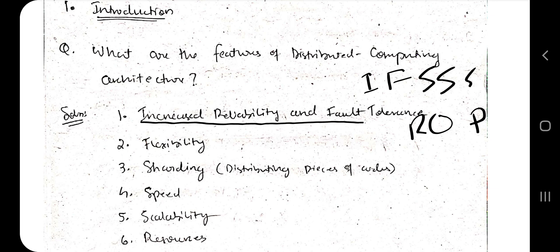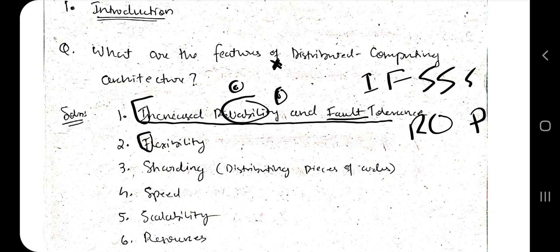I means Increased reliability and fault tolerance. In distributed computing, resources are distributed across different parts of the system, so if one system fails, others come to rescue. Fault tolerance means if one has a fault, the correct answer comes from the others. F means flexibility — if one part fails, the system is flexible enough to accommodate the rest. And S means sharding, which means distributing pieces of code across different parts of the system.